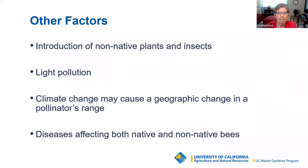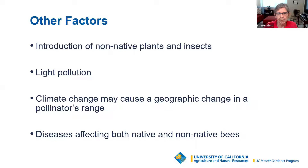Other factors include the introduction of non-native plants and insects, which force out our native plants and insects. Light pollution — the ambient light over cities and towns can disturb the flight path of the moth. Climate change may cause a geographic change in a pollinator's range, which is happening now. And diseases affecting both native and non-native bees, including colony collapse disorder, are ongoing. The neonicotinoids are the most damaging to native and non-native bees, possibly in combination with the varroa mite.